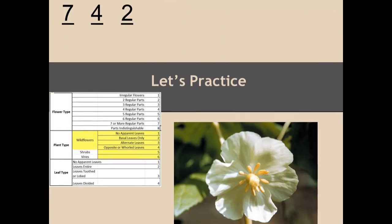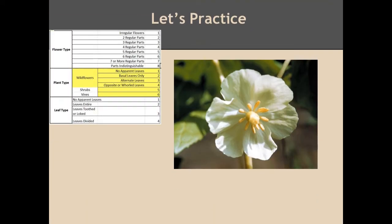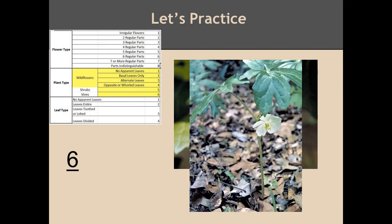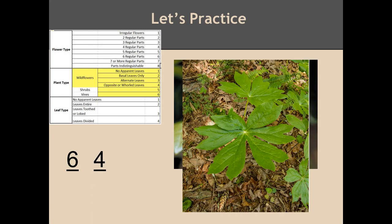Flower number five. There are six regular parts. The leaves are arranged opposite each other. And the leaf type? These are lobed leaves.